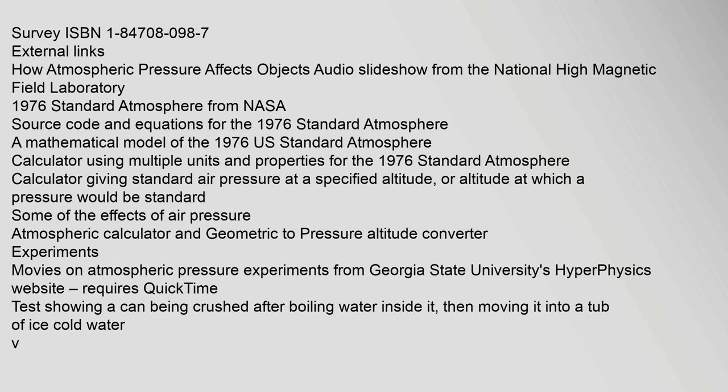1976 Standard Atmosphere from NASA. Source code and equations for the 1976 Standard Atmosphere Calculator — a mathematical model. Standard Atmosphere Calculator using multiple units and properties. Standard Atmosphere Calculator giving standard air pressure at a specified altitude, or altitude at which a pressure would be standard. Some of the effects of air pressure. Atmospheric calculator in Geometric to Pressure Altitude Converter. Experiments: movies on atmospheric pressure experiments from Georgia State University's HyperPhysics website.